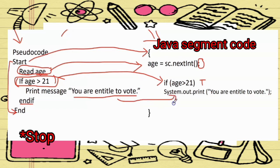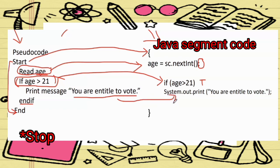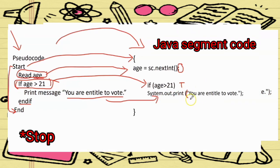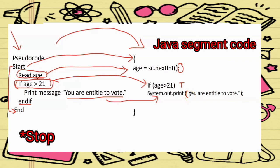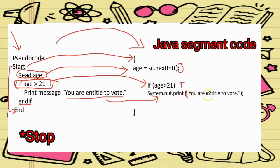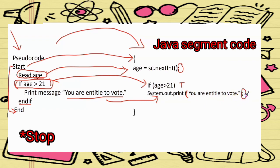To write in Java, if you want to print a display, you must use System.out.print as usual. Then bracket and double quotes — it is compulsory to put double quotes for the display message. So: System.out.print("You are entitled to vote");.